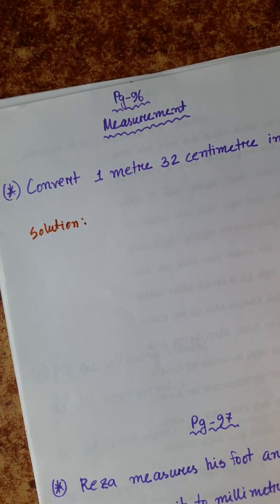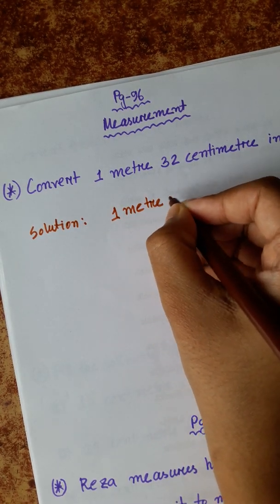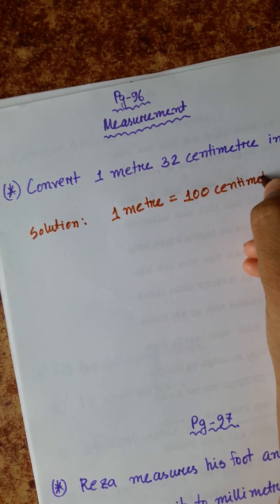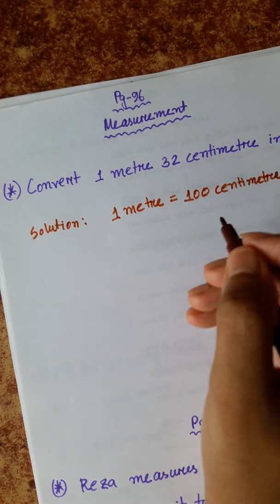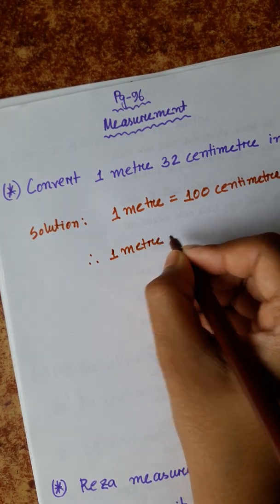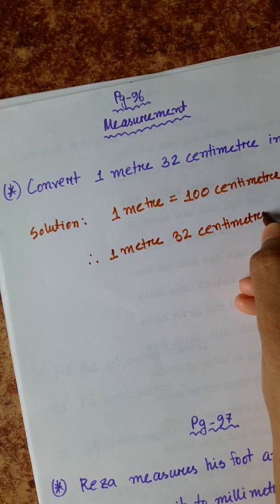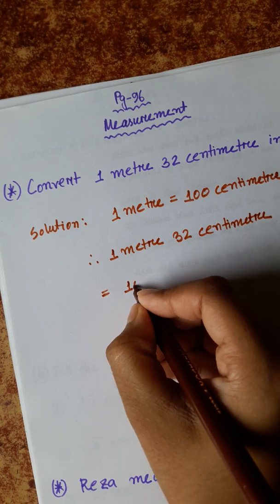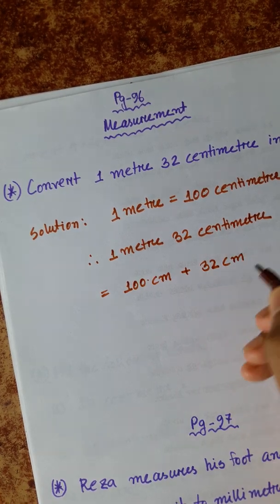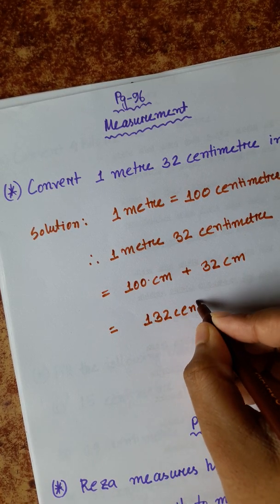We have to convert it into centimeters. We will write: 1 meter is equal to 100 centimeters. So, 1 meter 32 centimeters is equal to 100 centimeters plus 32 centimeters. The answer is 132 centimeters.